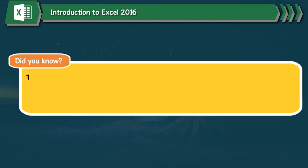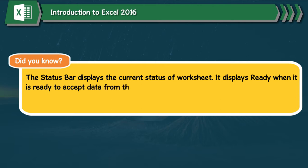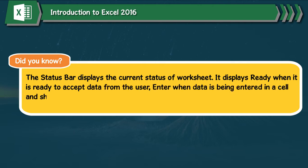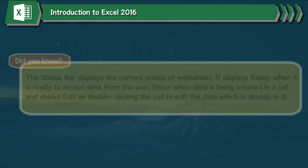Did You Know? The status bar displays the current status of the worksheet. It displays 'Ready' when it is ready to accept data from the user, 'Enter' when data is being entered in a cell, and 'Edit' on double-clicking the cell to edit data which is already in it.